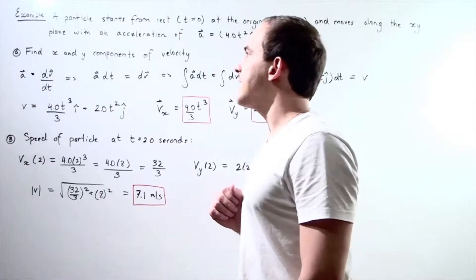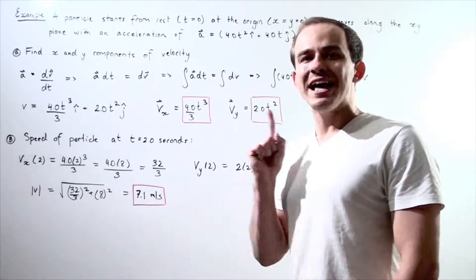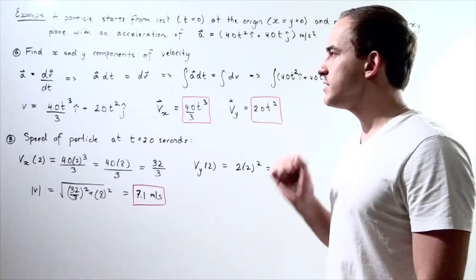So let's look at the following example. A particle starts from rest at time equals zero at the origin, so at the point zero, zero,